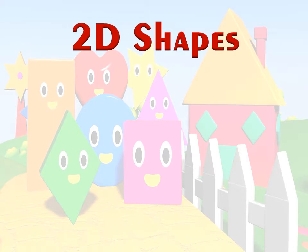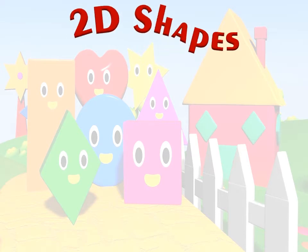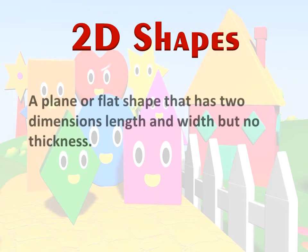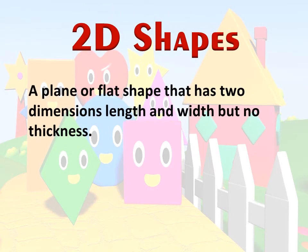2D shapes. A plane or flat shape that has two dimensions, length and width but no thickness, is called a 2D shape.